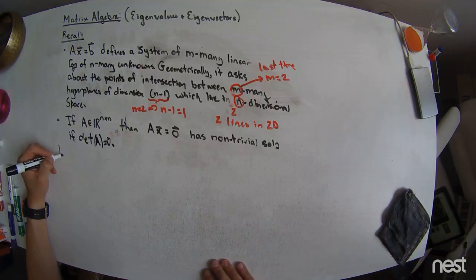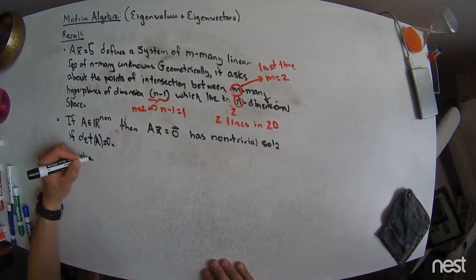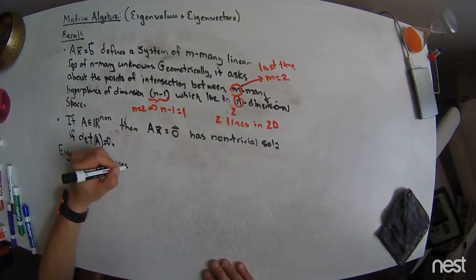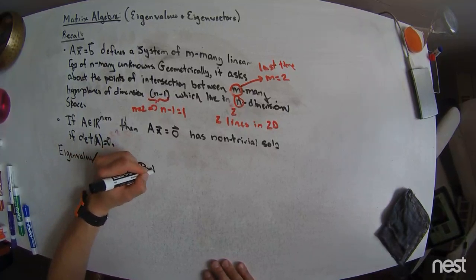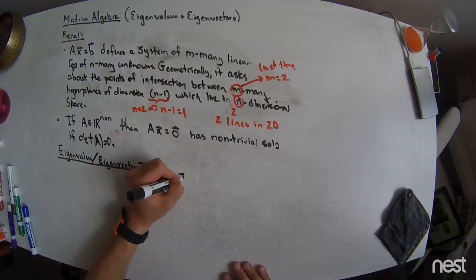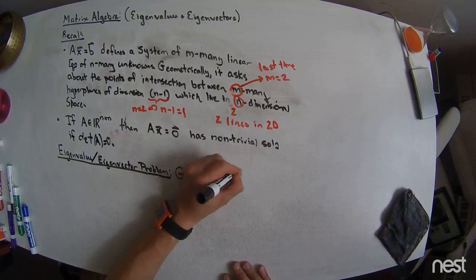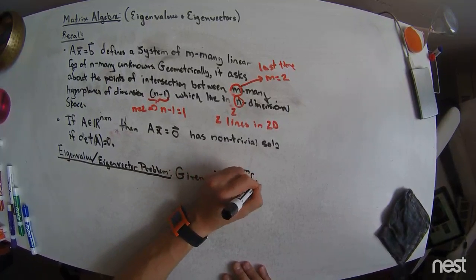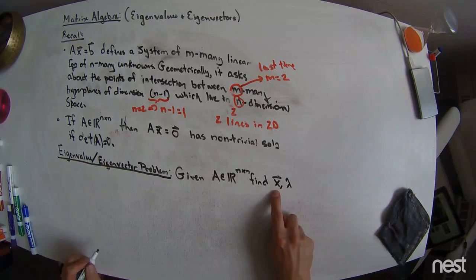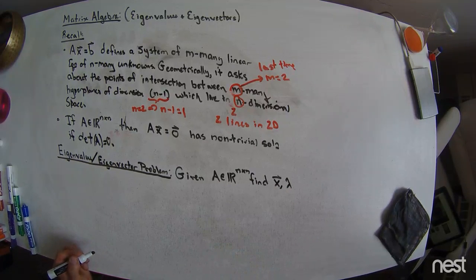So, what we have next is this idea of an eigenvalue, eigenvector problem. Given A, which is in R n by n, find X and lambda. X is a vector, lambda is a scalar. I don't tell you where they are, because the problem here is that they could be complex.